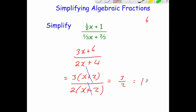So to simplify algebraic fractions, we factorise the top line, factorise the bottom, and cancel anything out if possible.